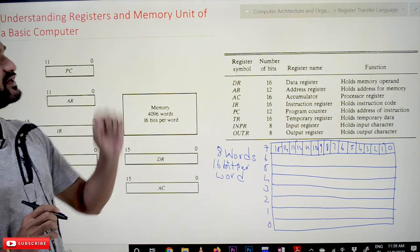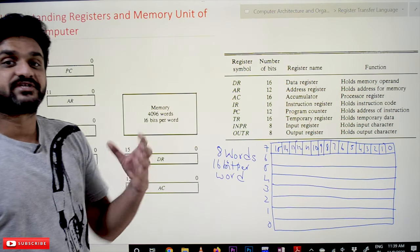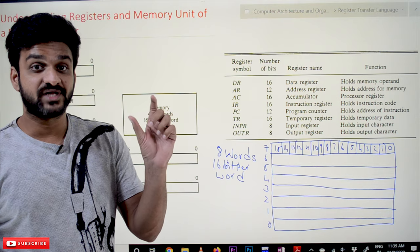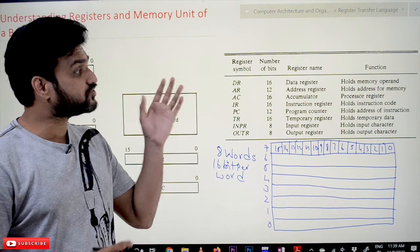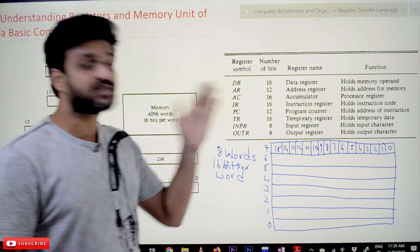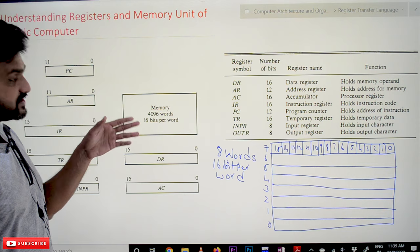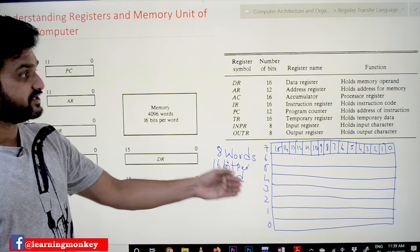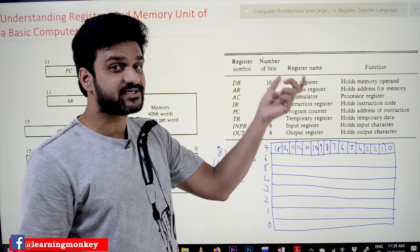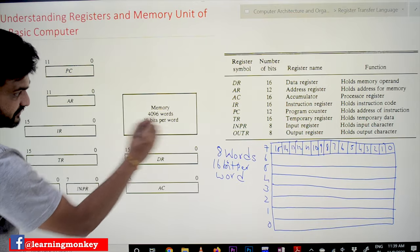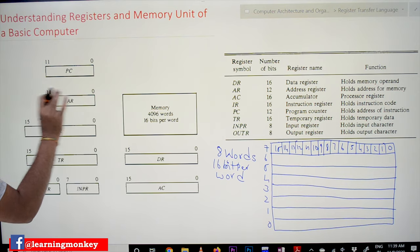What is the job done by each and every register? The data register holds the memory operand. For example, if we want to add 2 plus 3, the 2 and 3 are called operands. The data values will get stored in the data register. Address register holds the address of the memory. The address of each and every word of this memory will get stored in the address register.